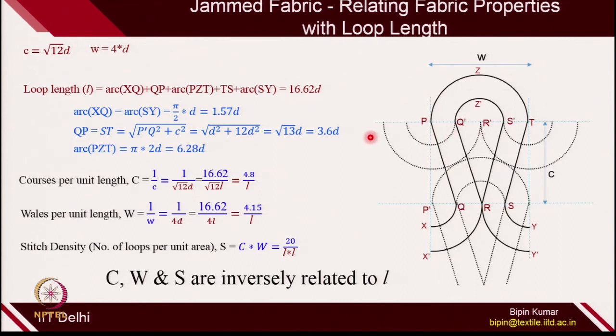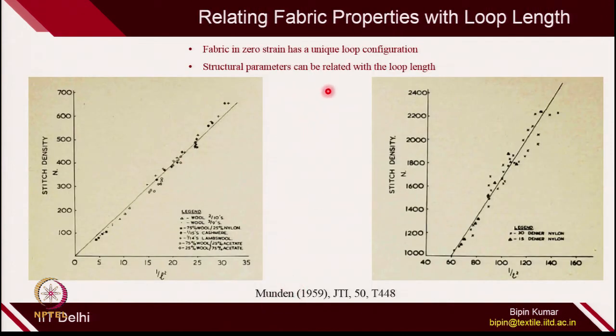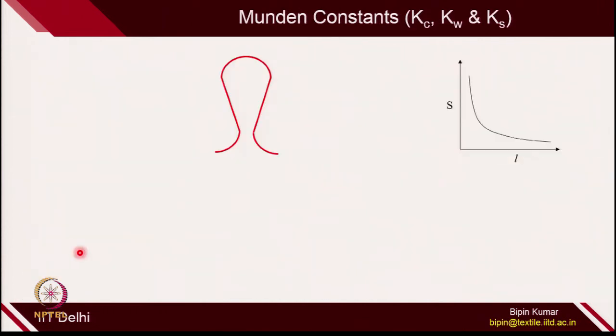Later, after about 10 years, Munden was another scientist who tried to observe the behavior of non-jammed fabric. All the relationships we derived assume fabric is in jammed condition with loops either circular or straight, but in reality fabric does not follow these assumptions. Munden made many fabrics on different technologies, especially single jersey fabrics, and wanted to relate stitch density with 1/L². He found very good correlation of stitch density with L², giving equations with some constant.